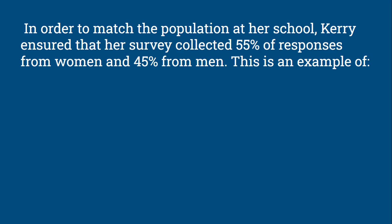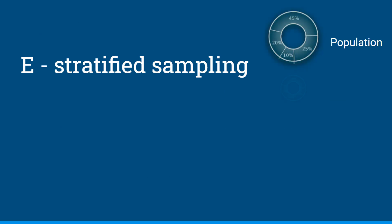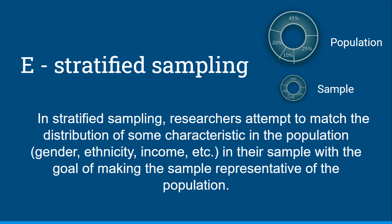In order to match the population at her school, Carrie ensured that her survey collected 55% of responses from women and 45% from men. This is an example of: random allocation, random sampling, naturalistic observation, opportunity sampling, or stratified sampling? This would be an example of stratified sampling. In stratified sampling, researchers attempt to match the distribution of some characteristic in the population — such as gender, ethnicity, or income groups — with the goal of making the sample representative of the population.